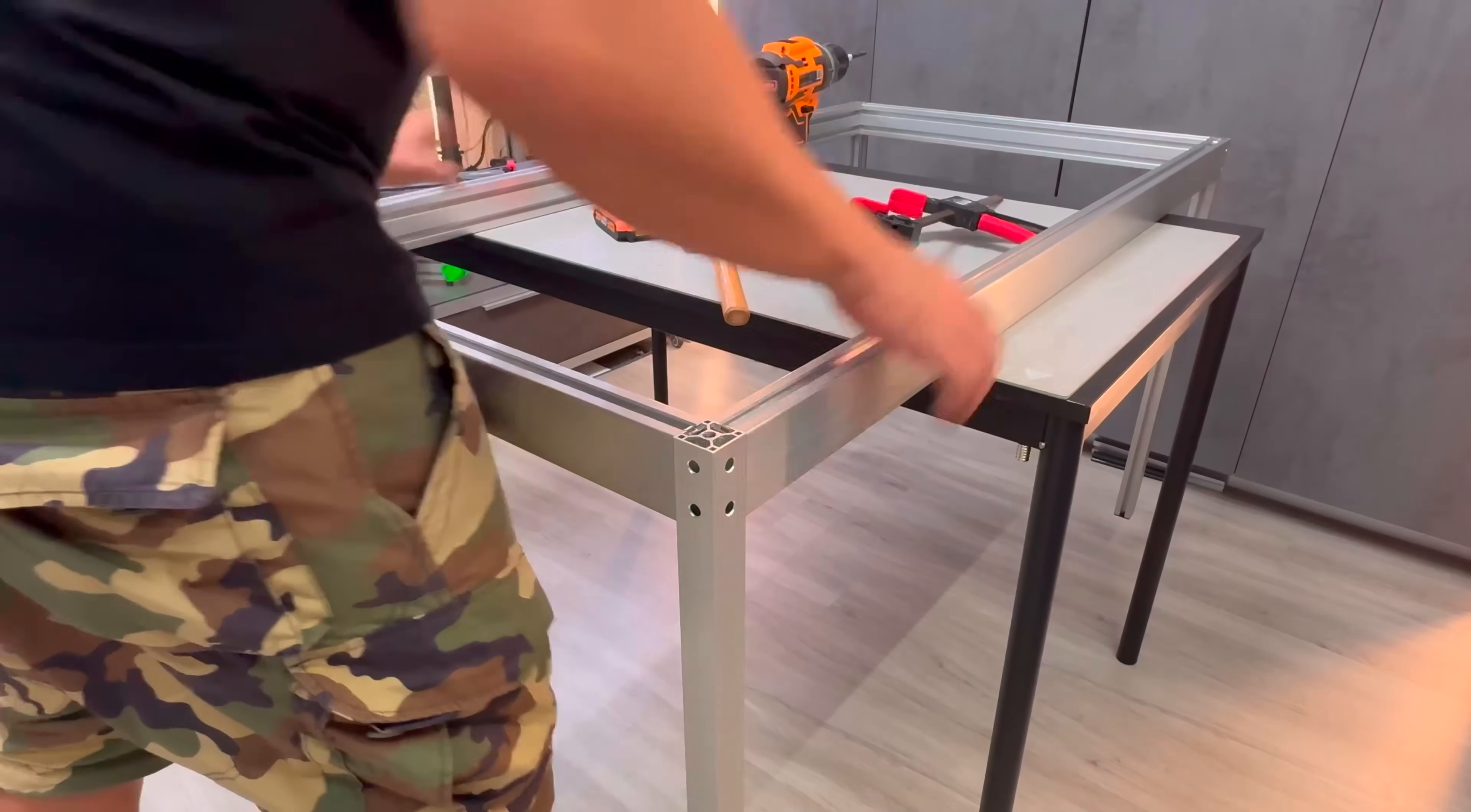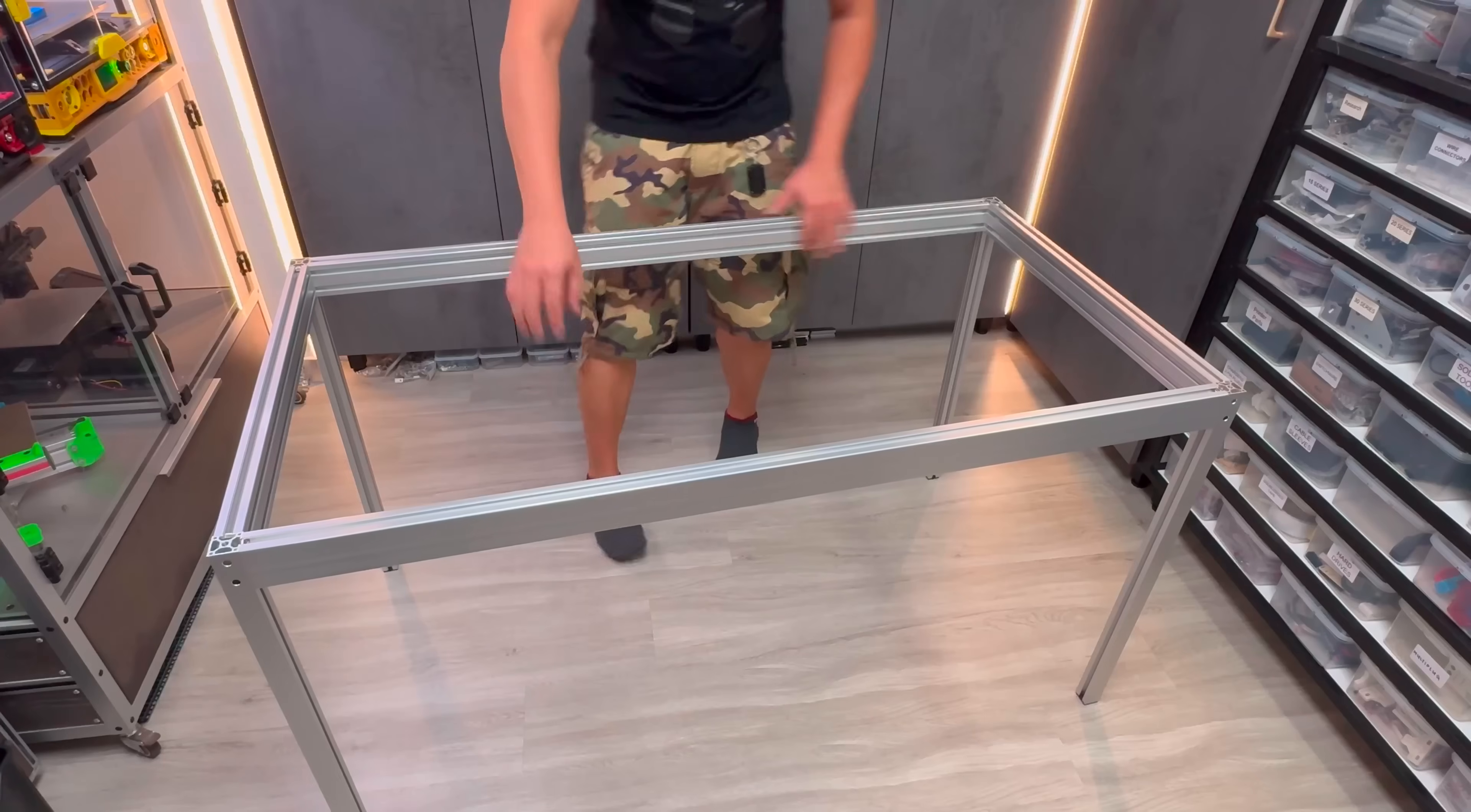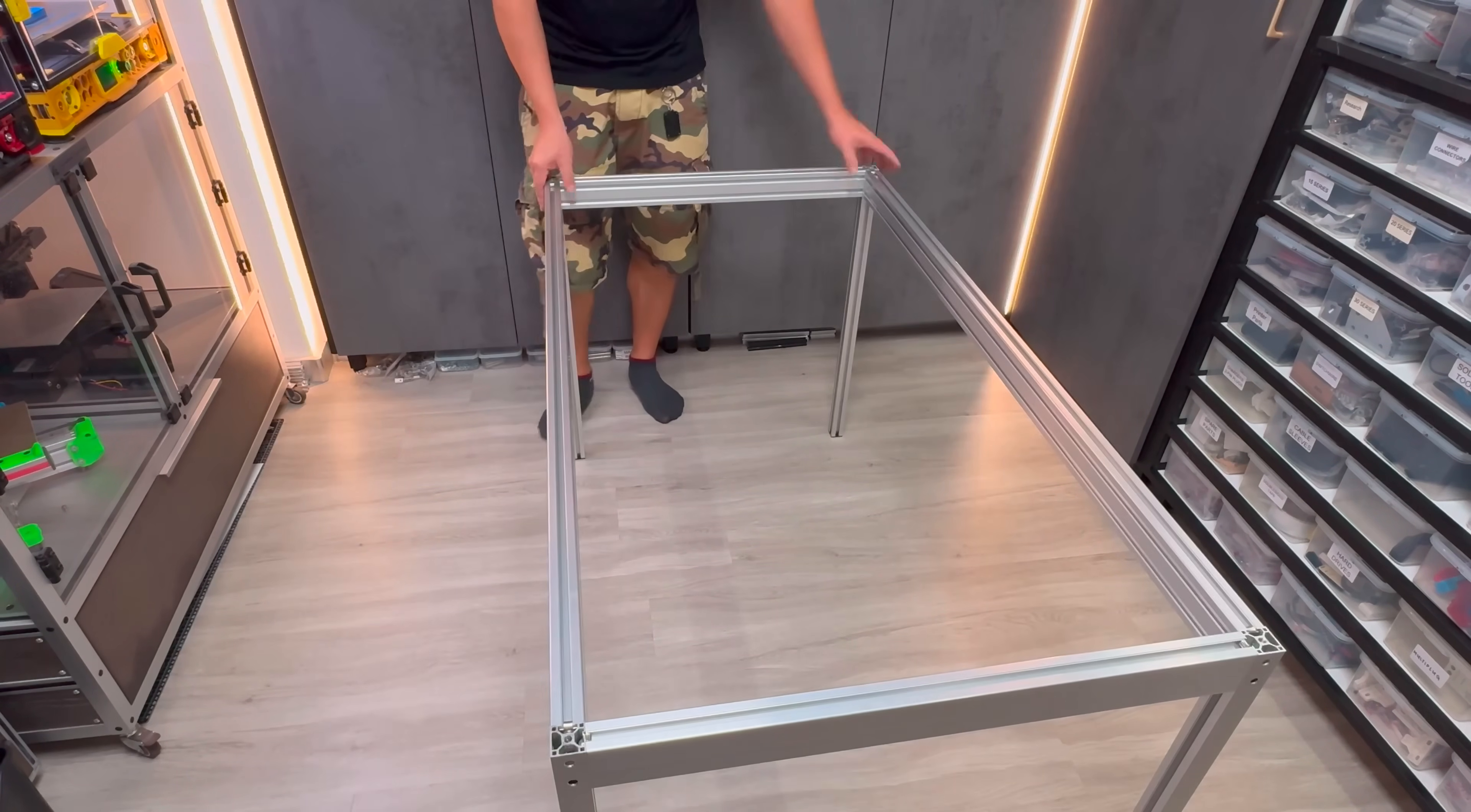For now, let's inspect our work. We've built an aluminum extrusion frame perfect for a table and extremely lightweight. Before carrying on, I need to move it around and verify everything is done correctly. From what you can see, it's built exactly to spec.